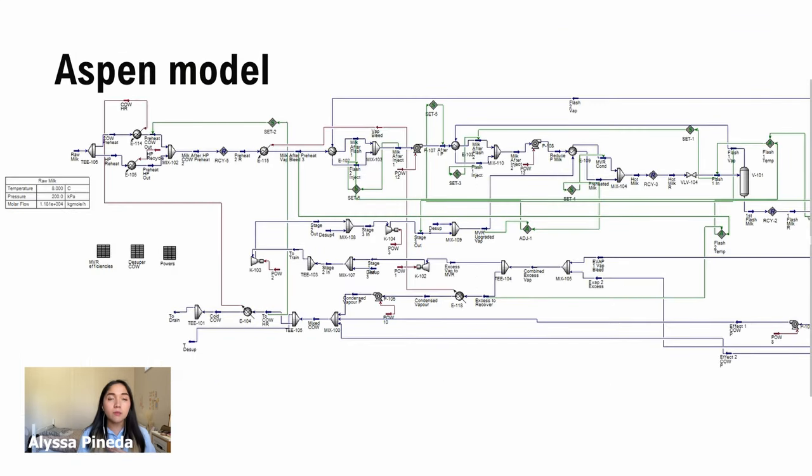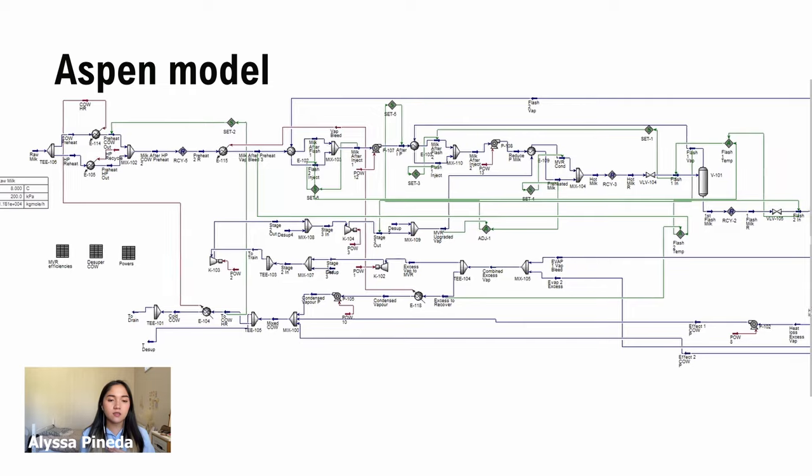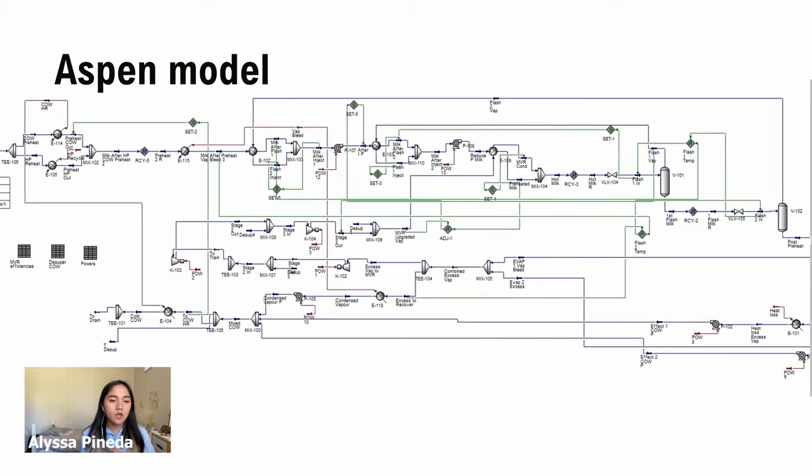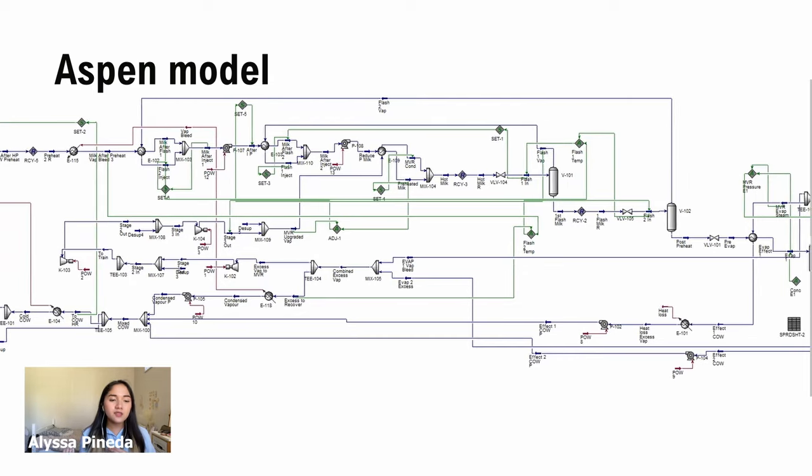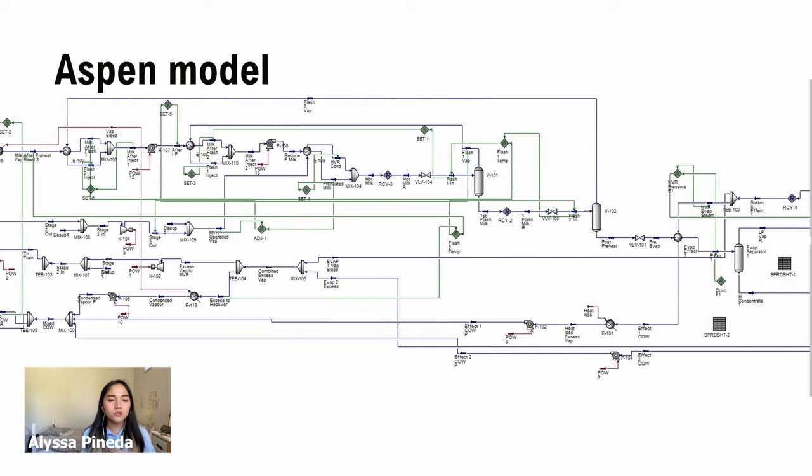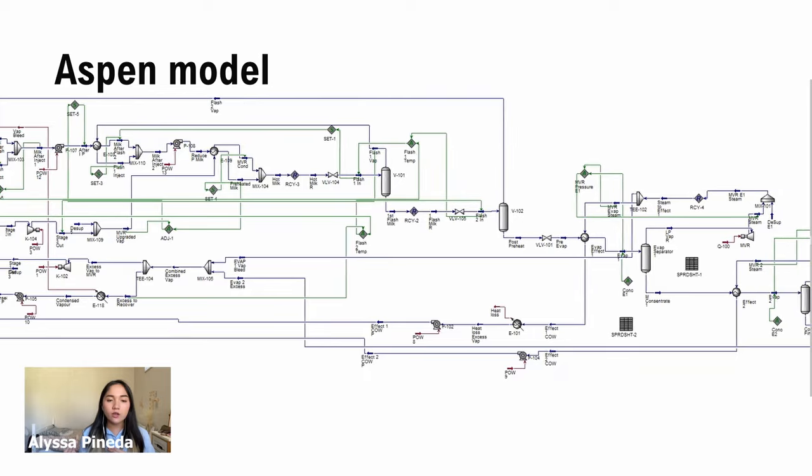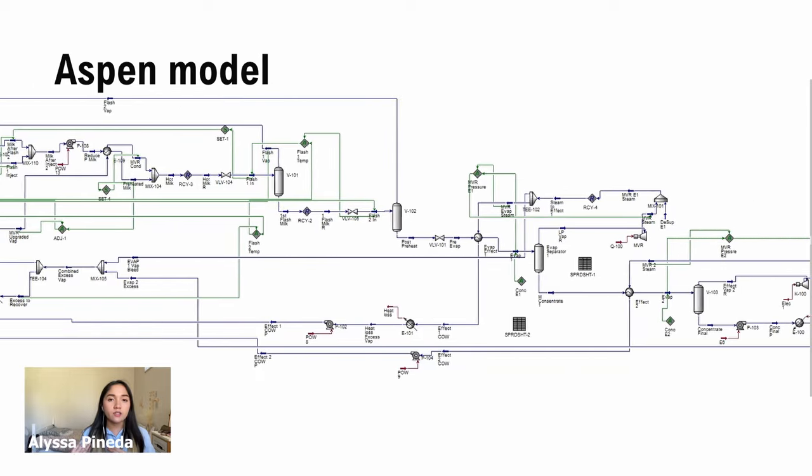We optimize our system by modifying process conditions such as temperature and pressure, or change the placement or amount of some of our process operations. We continuously update our parameters to eventually achieve energy targets that satisfy our project objectives.